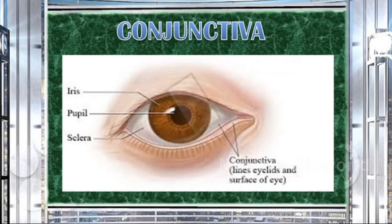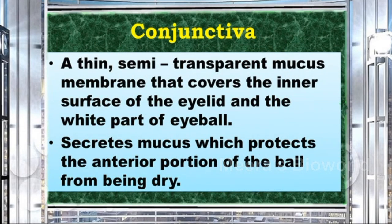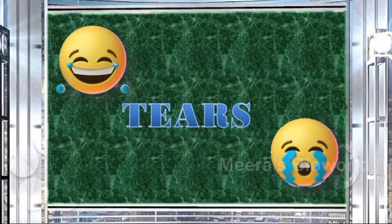In the picture you can see the conjunctiva lining the eyelids and the surface of the eye. Conjunctiva is a thin, semi-transparent mucous membrane that covers the inner surface of the eyelid and the wide part of the eyeball. It secretes mucus which protects the anterior portion of the eyeball from drying out.